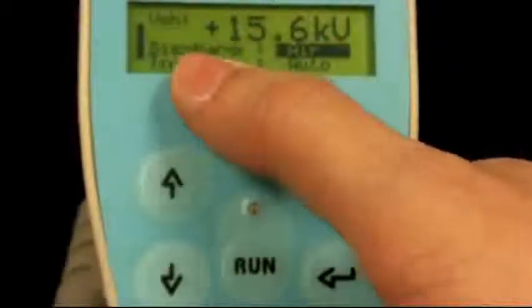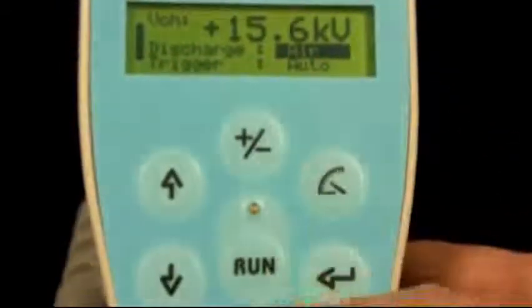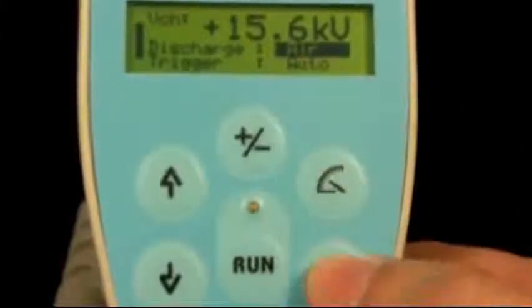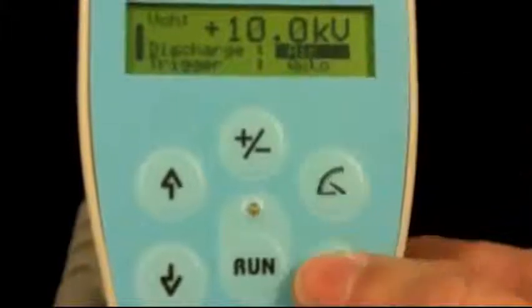The next step is discharge, which is either using air or contact. To make the change, just hit enter and it will switch over. Enter again and it will switch back.